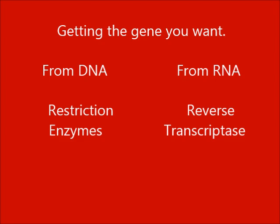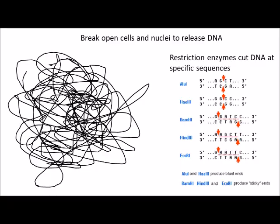There are two ways of doing that. The first way is to use restriction enzymes. Restriction enzymes cut DNA at a specific sequence, which is usually a palindrome, so it reads the same forwards and backwards on either strand.